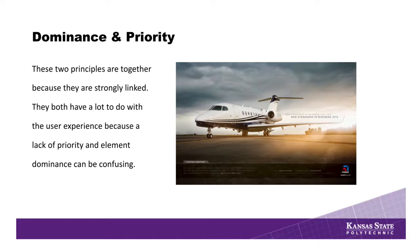Dominance and priority is kind of similar to balance. In this example, the most dominant part of the design is the photography — the picture of the jet — which is what they want the viewer to see first. The headline next to the jet is the secondary priority, and then towards the bottom is the third area with contact information and more details about the jet. It just depends on your design and what you want to be the dominant area — it could be photography or text, depending on the purpose of the design.